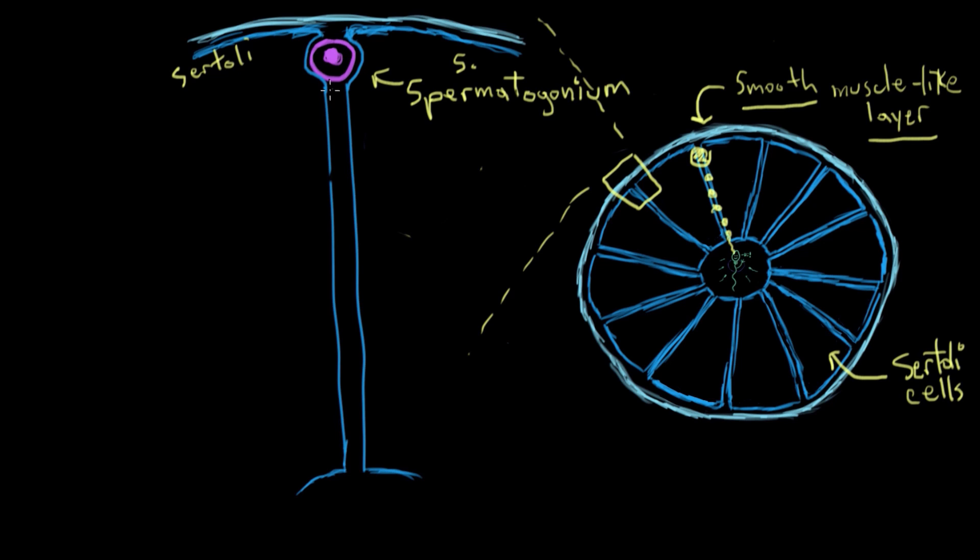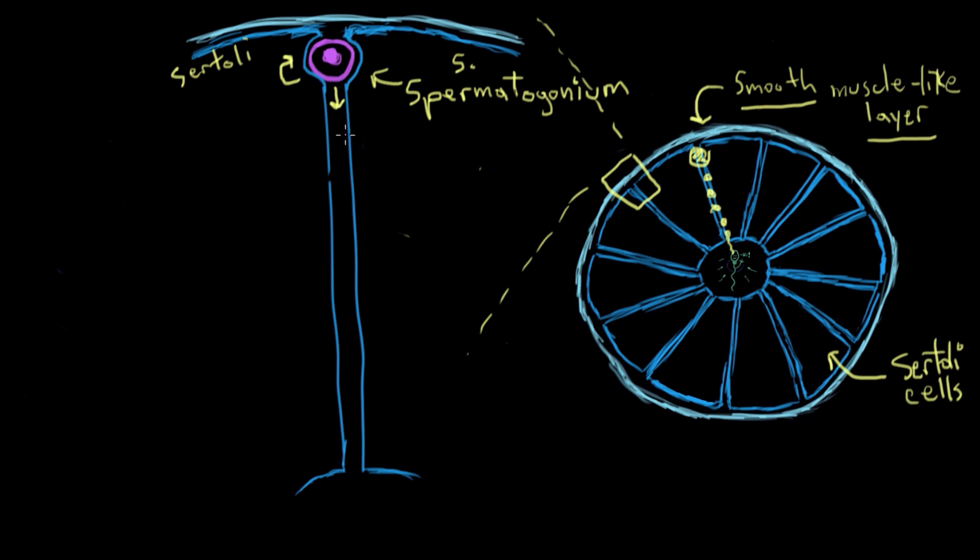Immediately you might think, what if these spermatogonium are differentiating down the pathway to become mature sperm? What happens when they all do that? Won't we run out of spermatogonium? And that's a great thought. How that problem is solved is that when spermatogonium undergo mitosis and split into two spermatogonium, one will differentiate into the next precursor sperm cell down the pathway of making mature sperm, and the other one will just keep being a spermatogonium. So it'll give rise to another two cells and one will differentiate and one will keep being a spermatogonium and so on.